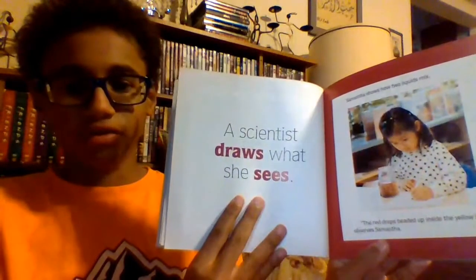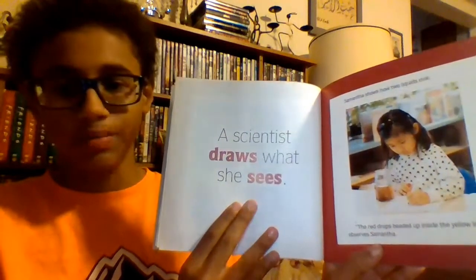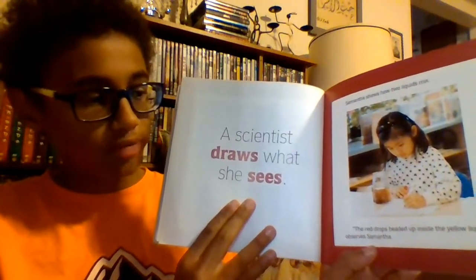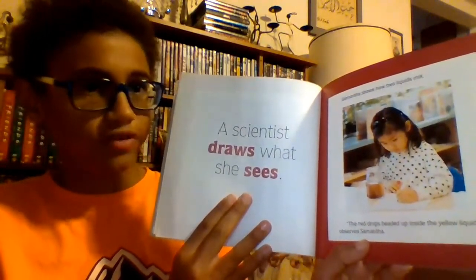A scientist draws what she sees. Samantha shows how two liquids mix. 'The red drops beaded up inside the yellow liquid,' observes Samantha.